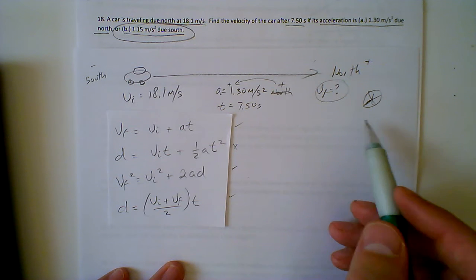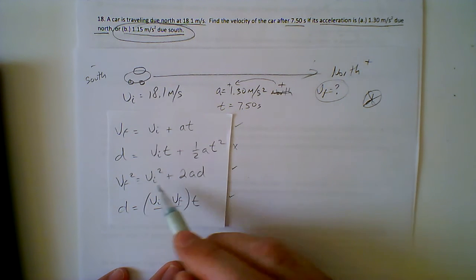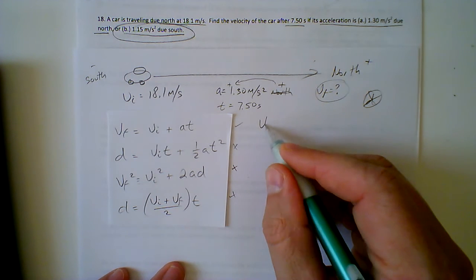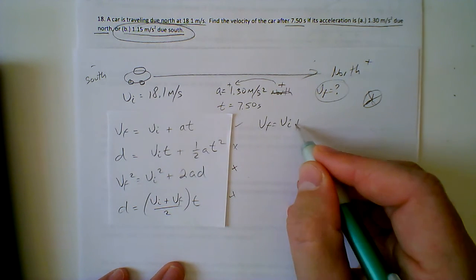And then we don't want d in the equation. One still works, the second one was cancelled out before, third one's not going to work it has d in it, the fourth one's not going to work it has d in it. So the equation we decided to use was vf equals vi plus at.